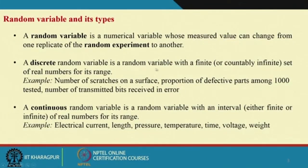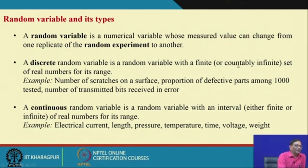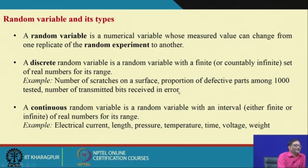A discrete random variable is a random variable with a finite or countably infinite set of real numbers for its range. For example: number of scratches on a surface — 5, 10, or 50 scratches; number of defective parts among a thousand tested; number of transmitted bits received in error. These are all counts.